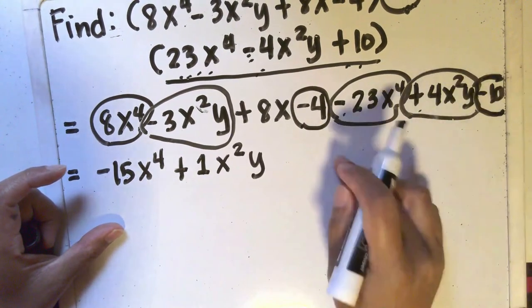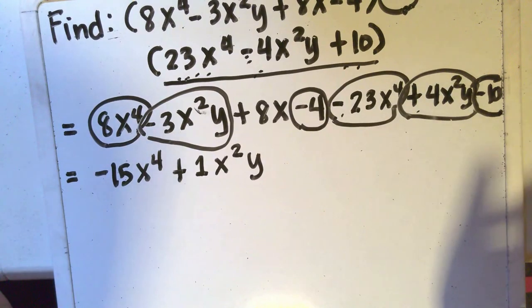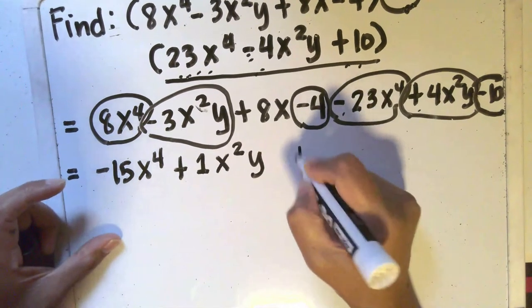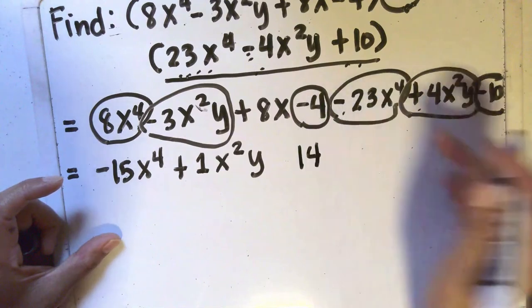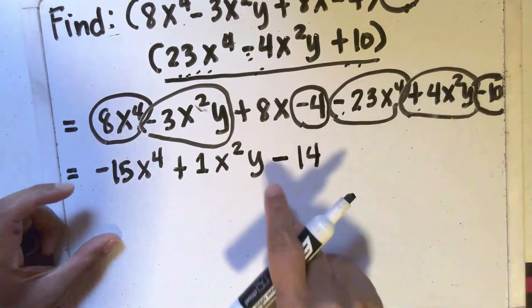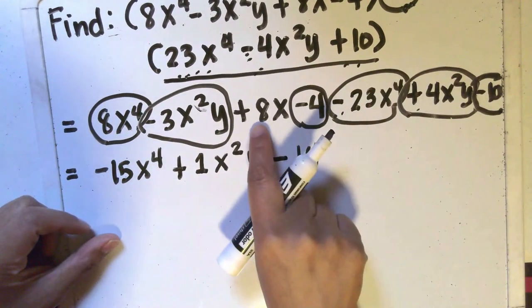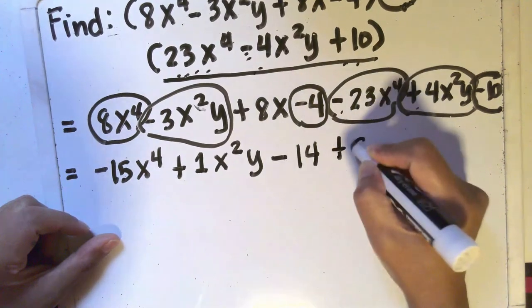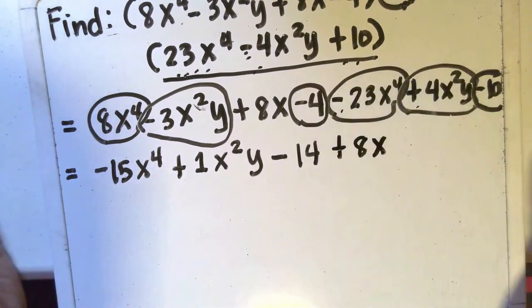They're both negative so I can simply just add their absolute values. 10 plus 4 is 14 and I can copy their common sign which is negative. So I'll have minus 14. And then I can just copy plus 8x since I did not have to do anything with it.